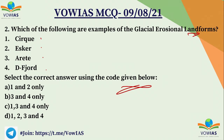Here if you see the glacial erosional landforms, the correct answers are one, three and four — Cirque, Arête and Fjord. All three are part of the glacial erosional landforms.